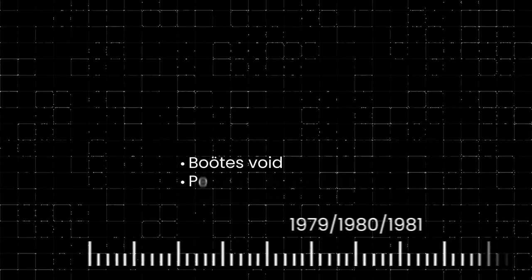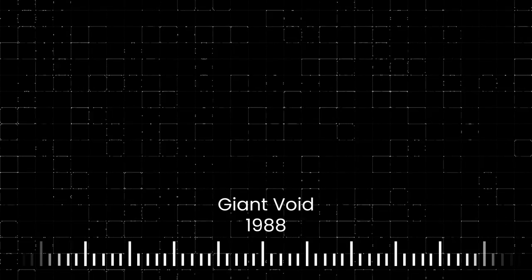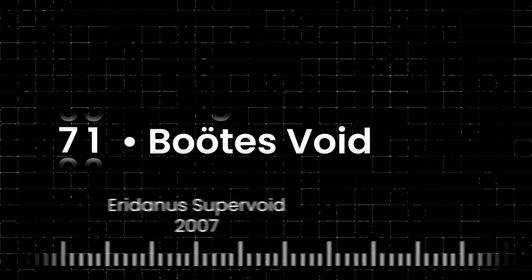More than 40 years have passed since the discovery of the supervoid in the Boötes constellation. During this time, many other supervoids were discovered, and even surpassing it in size. Now, the supervoid in the constellation Boötes occupies only a modest 71st place.